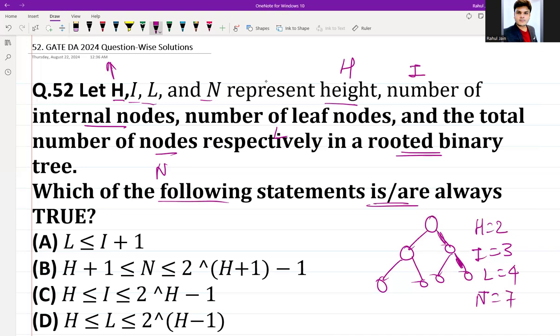To map the answers: L is less than or equal to I plus 1. Four is less than or equal to three plus one, which equals four. Yes, it is mapping. Option A is mapped. H plus 1, which is 2 plus 1 equals 3, is less than or equal to N which is 7, and 7 is less than or equal to 2 to the power H+1 minus 1, which is 2 to the power 3 minus 1. Yes, it is also mapping. Option B is also mapped.